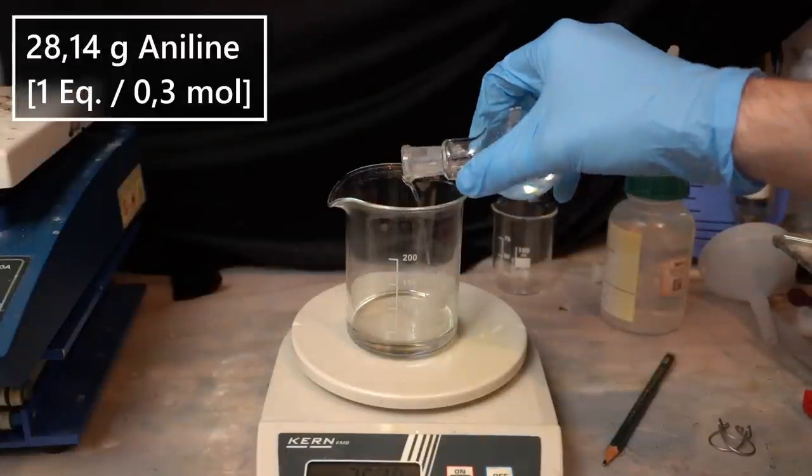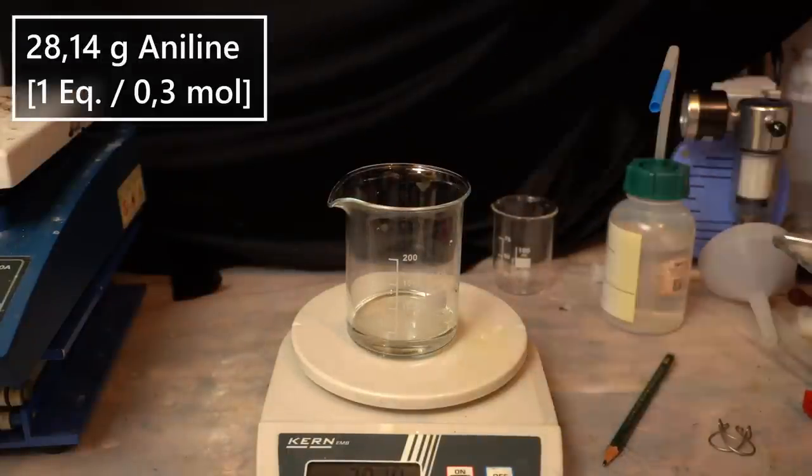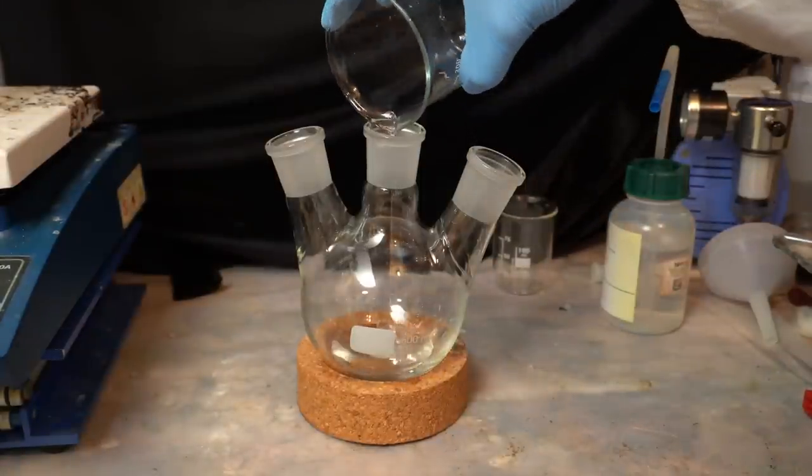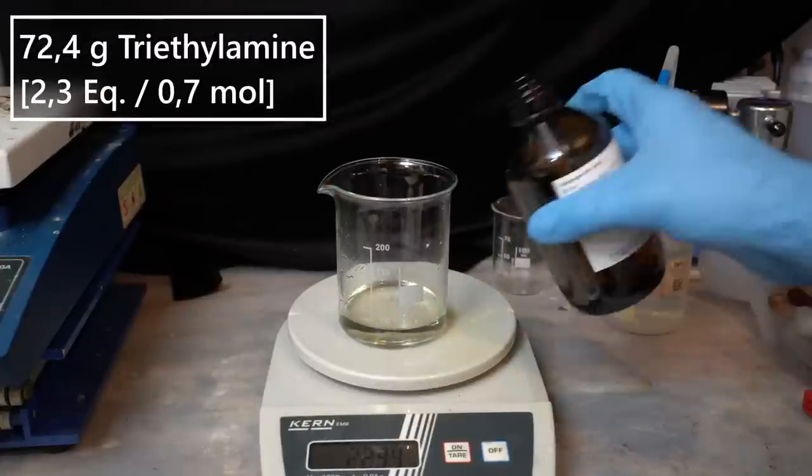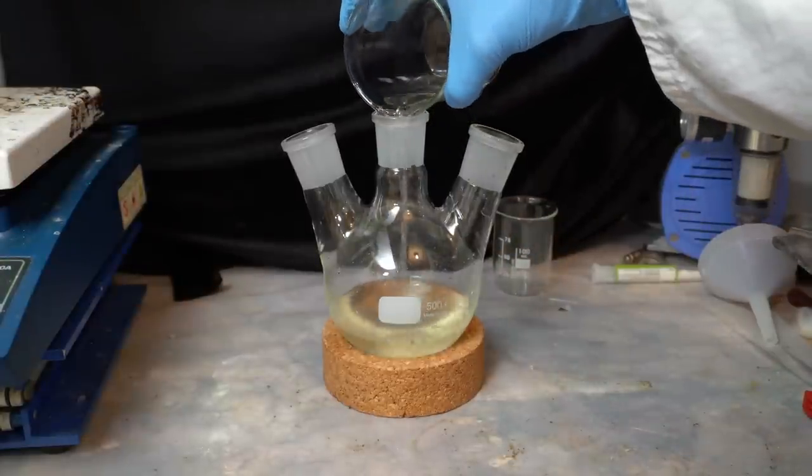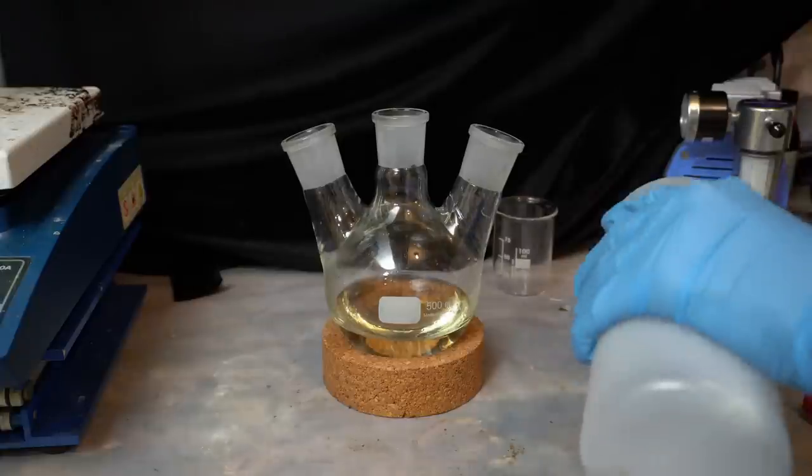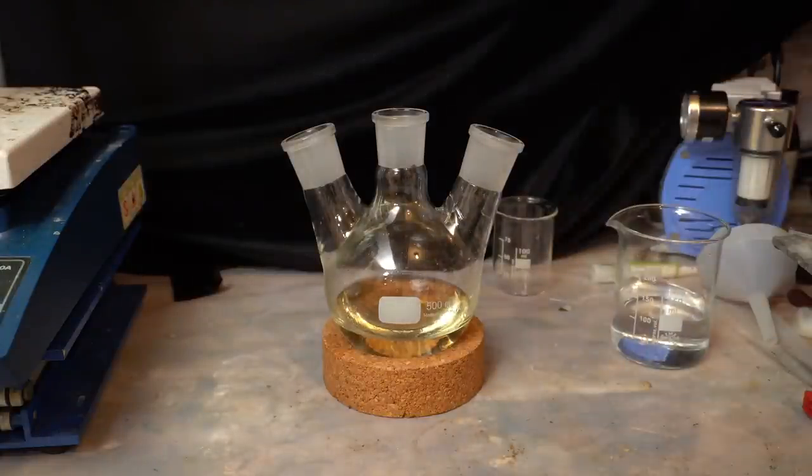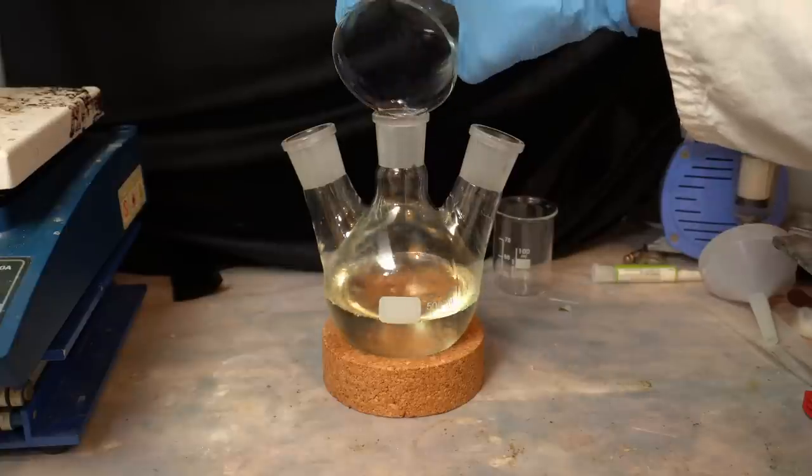28 grams of the fresh aniline are now weighed out and transferred to a 500 milliliter round bottom flask. Additionally 72 grams of triethylamine are also added to the flask. The beaker is then rinsed with 80 milliliters of acetone which will serve as the solvent for this reaction.